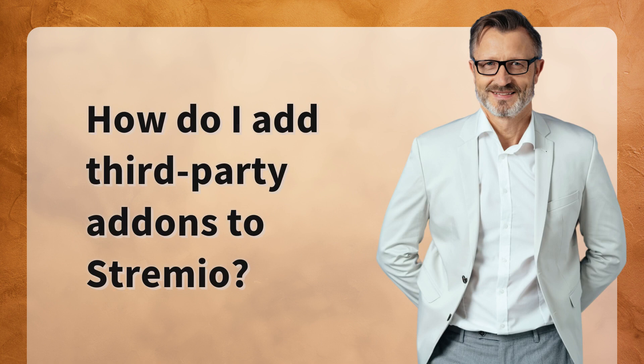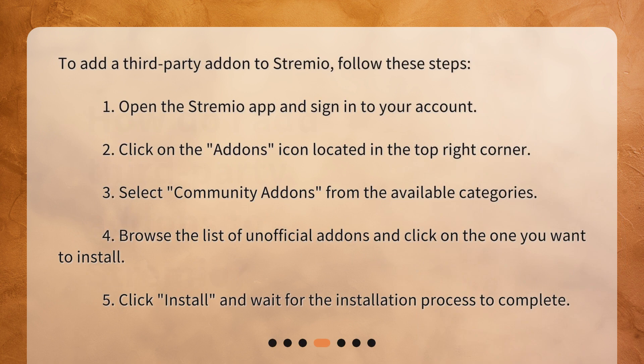How do I add third-party add-ons to Streamio? To add a third-party add-on to Streamio, follow these steps: 1. Open the Streamio app and sign in to your account. 2. Click on the Add-ons icon located in the top right corner. 3. Select Community Add-ons from the available categories. 4. Browse the list of unofficial add-ons and click on the one you want to install. 5. Click Install and wait for the installation process to complete.